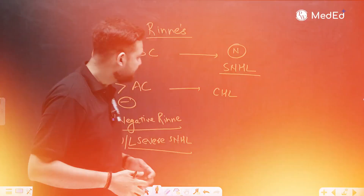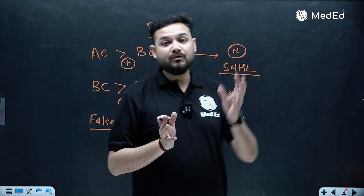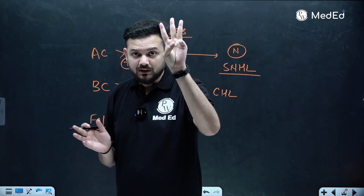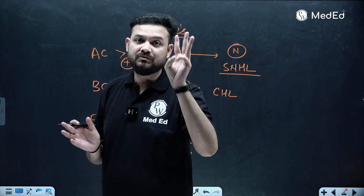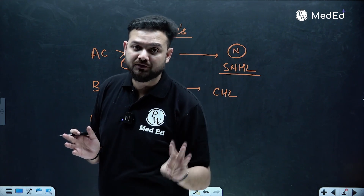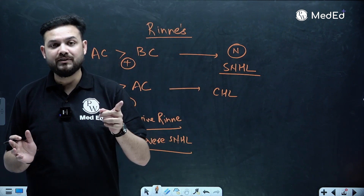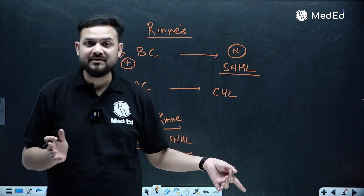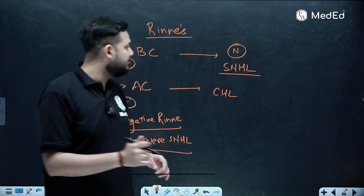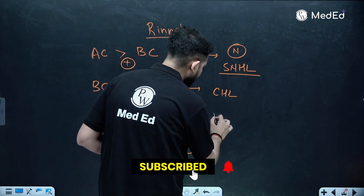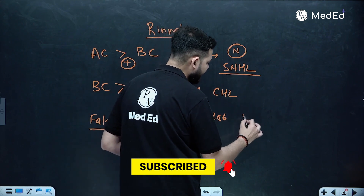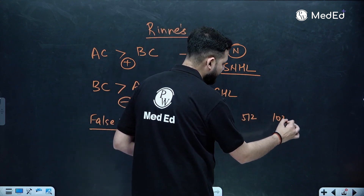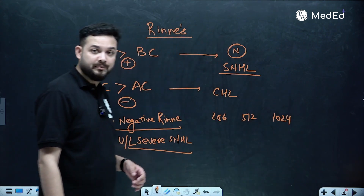Rinne's test can be done with all three tuning forks. All three are required — not just one. 512 Hz is only required for Weber's, but in Rinne's you need all three: 256 Hz, 512 Hz, and 1024 Hz.